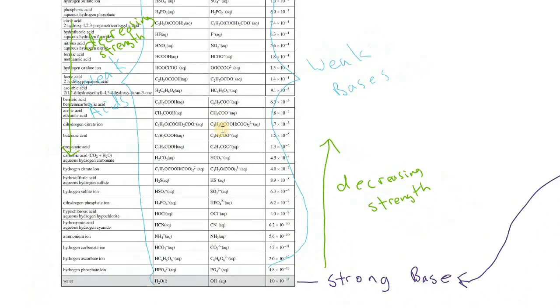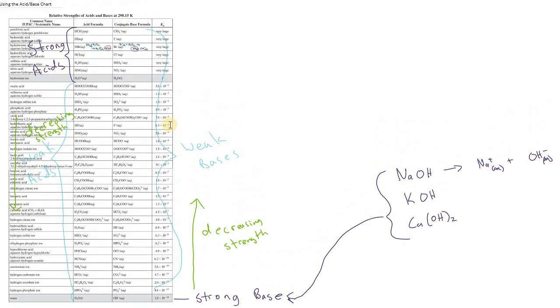So strong acids are found on the top of the table. Strong base found at the bottom of the table. And they decrease from there.